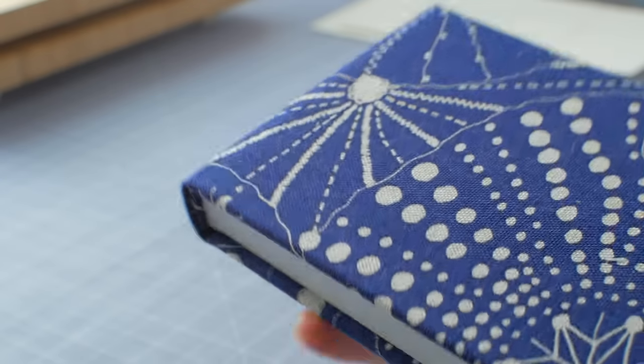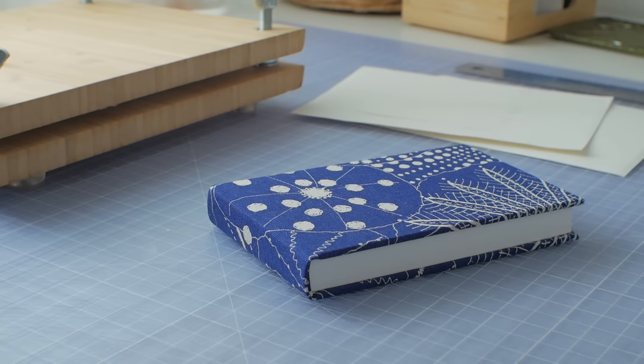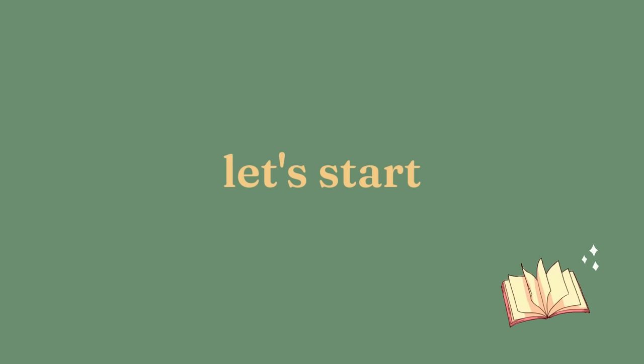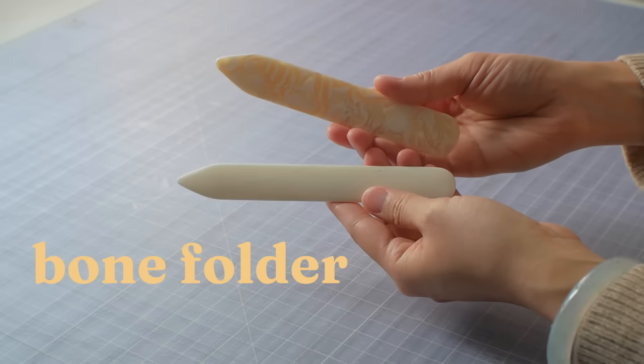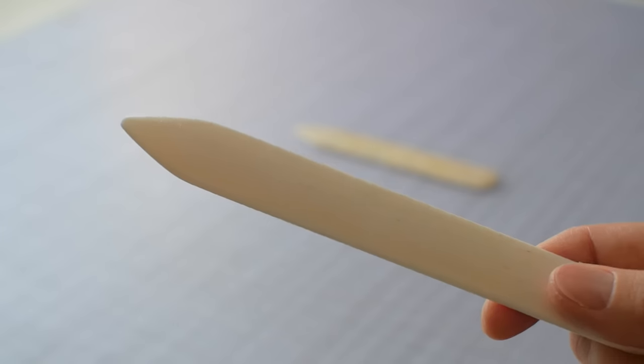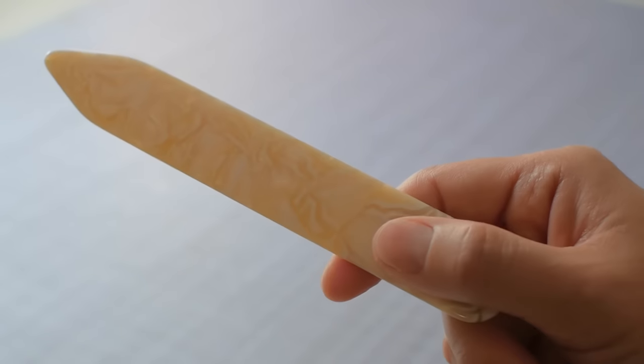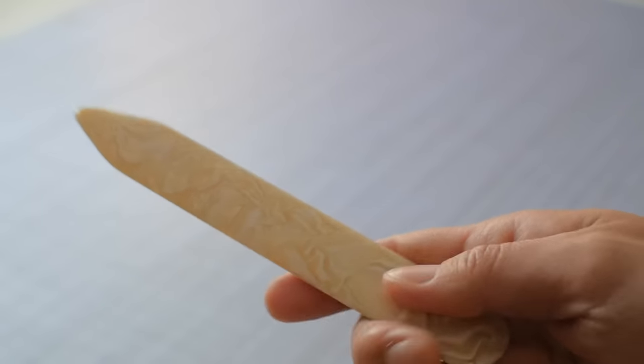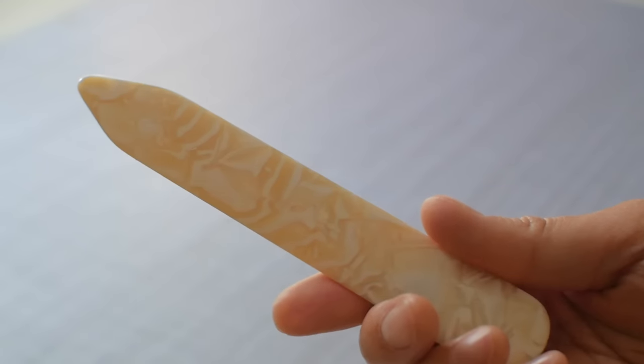I'm going to demonstrate how I use these tools throughout the process of making this case-bound book. Bone folders are very versatile as you'll see me use them from beginning to end. They're used to crease folds and smooth out bubbles and wrinkles among many other uses. I just released my own folder as a vegan alternative to the ones traditionally made of bone. They're available in my shop.